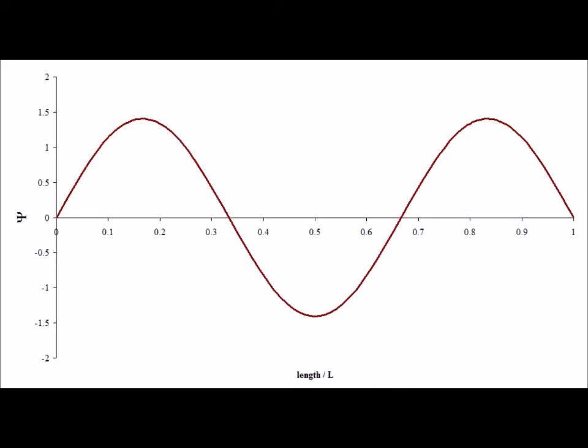Here is the wave function solution for n equals 3. Notice that there are two nodes, and also notice that one wavelength is completed in 2/3 L.